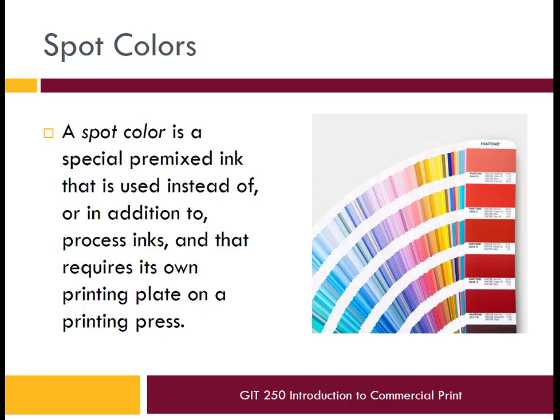A spot color is an ink that's mixed up using special pigments. It's separate from the CMYK color separations that you normally use to print a photo or a printed document. The reason for that is that you simply cannot recreate every single possible color using just cyan, magenta, yellow, and black. Those pigments have deficiencies that make it so you just can't reproduce some of the same colors.